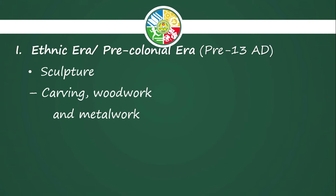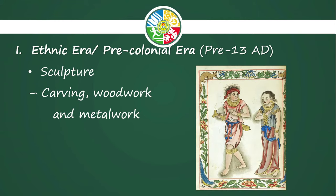Next is sculpture, which also refers to their crafts. We have carving, woodwork, and metalwork. In the photo provided, we can see a person carrying a sword made of wood or possibly gold or bronze. This best illustrates that in the ethnic era, artwork is a necessity for survival. They started creating swords, weapons, hammers, and tools in order to survive — used for hunting or building their homes.